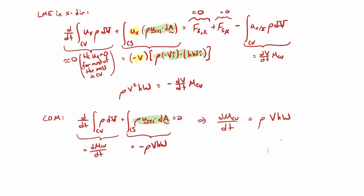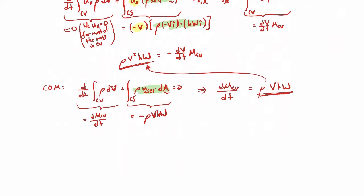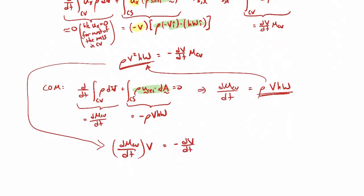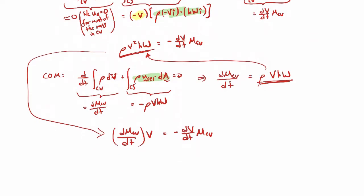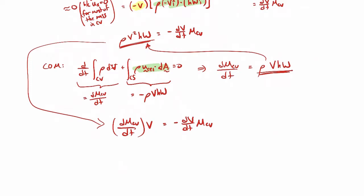Rather than solving the mass differential equation directly — since v is also a function of time — I'll substitute the expression for rho v h w back into the momentum equation. Rewriting, we get: dm_cv/dt times v equals minus dv/dt times m_cv. Now I have it in a form where I can solve more easily.